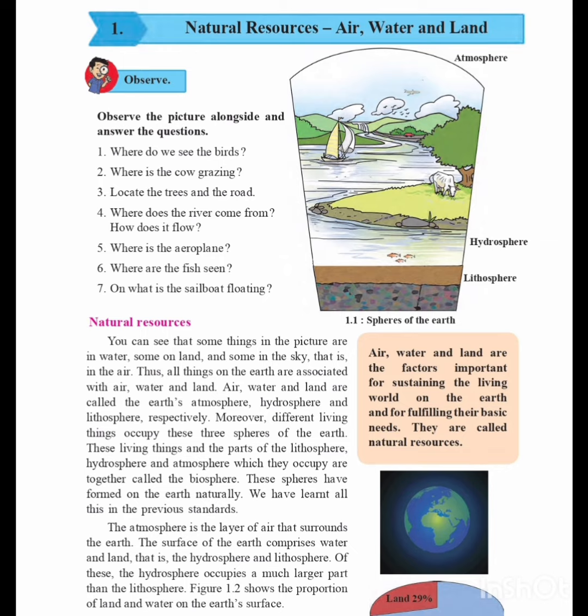These spheres are formed on the earth naturally. We have learnt all these in the previous standards. The atmosphere is a layer that surrounds the surface of the earth, and comprises water and land in the hydrosphere and lithosphere. Of these, the hydrosphere occupies a much larger part than the lithosphere.